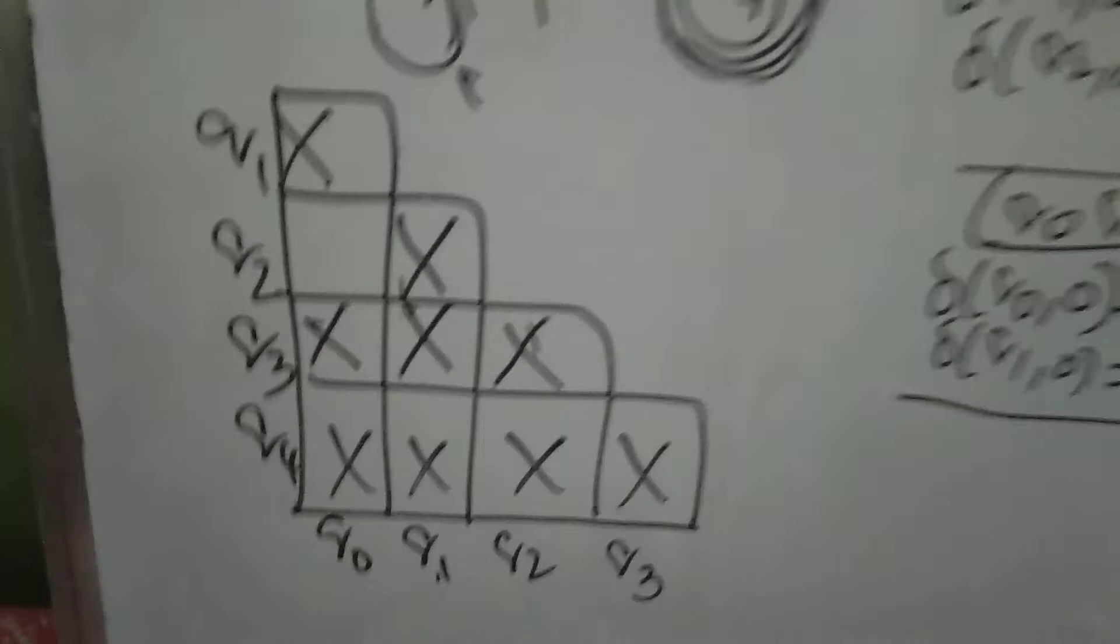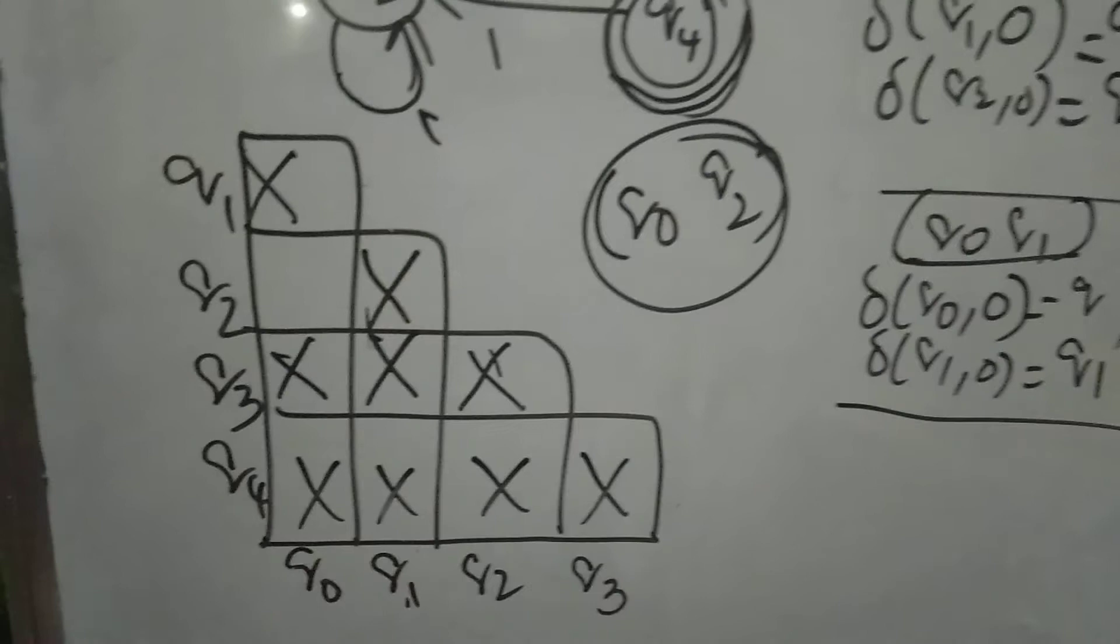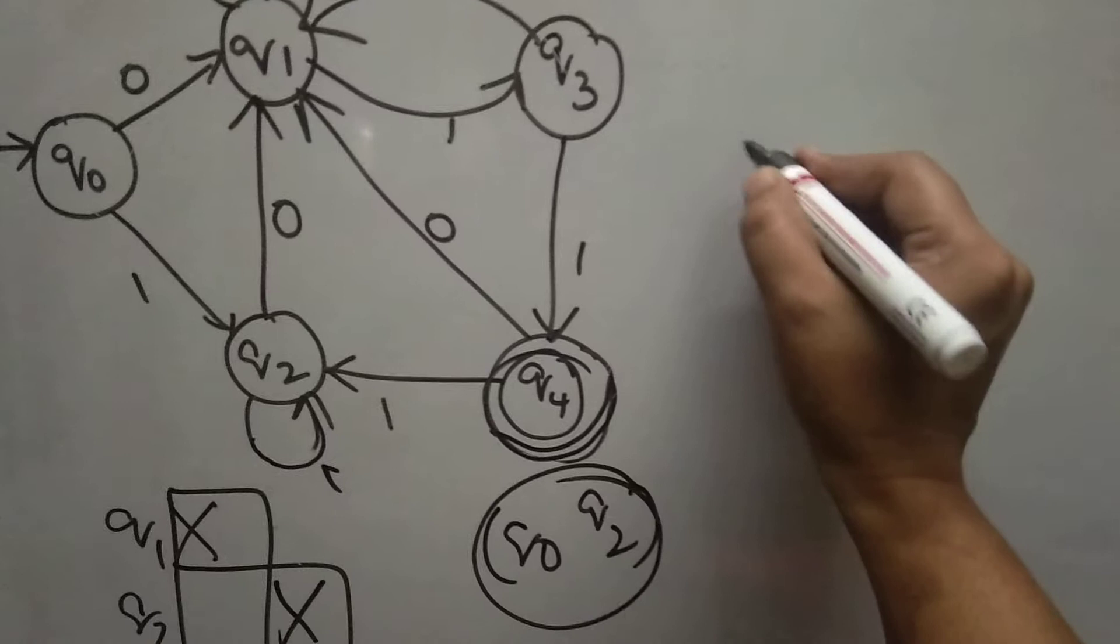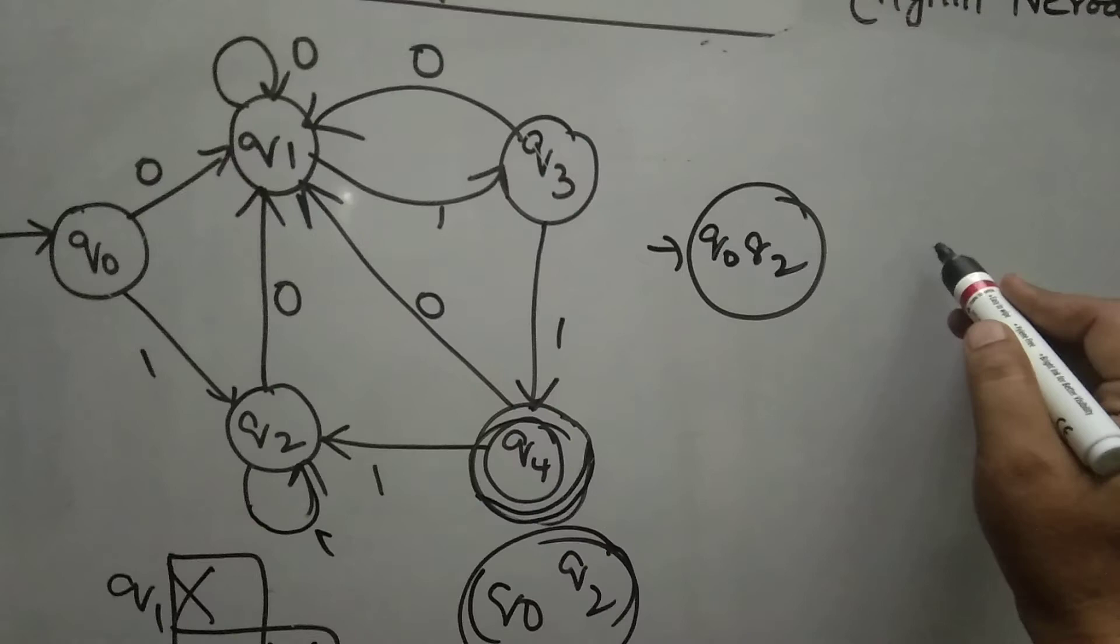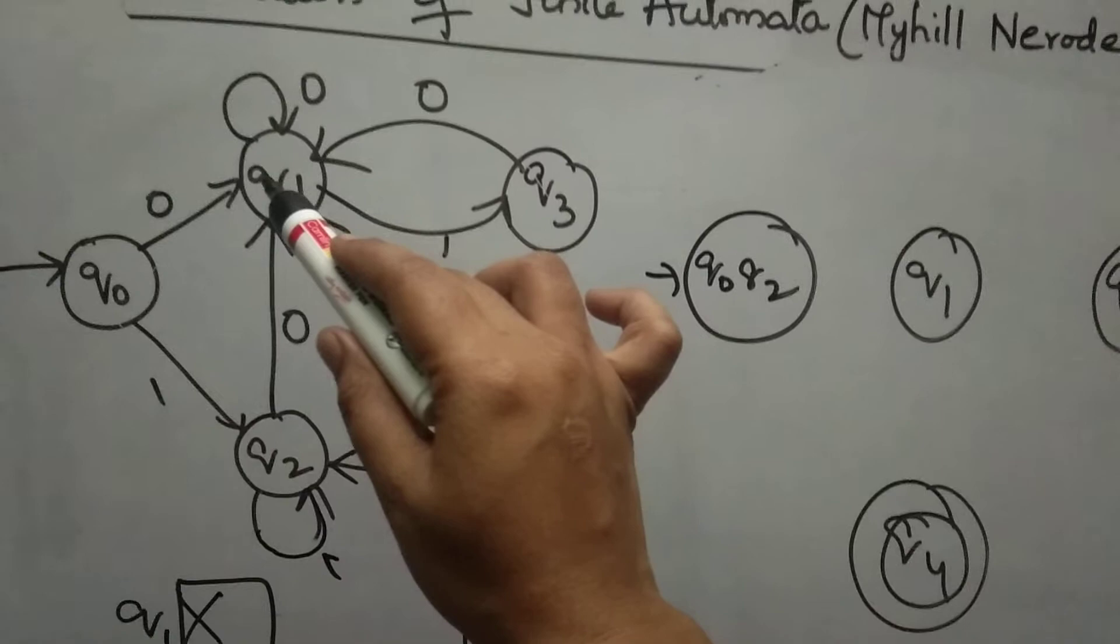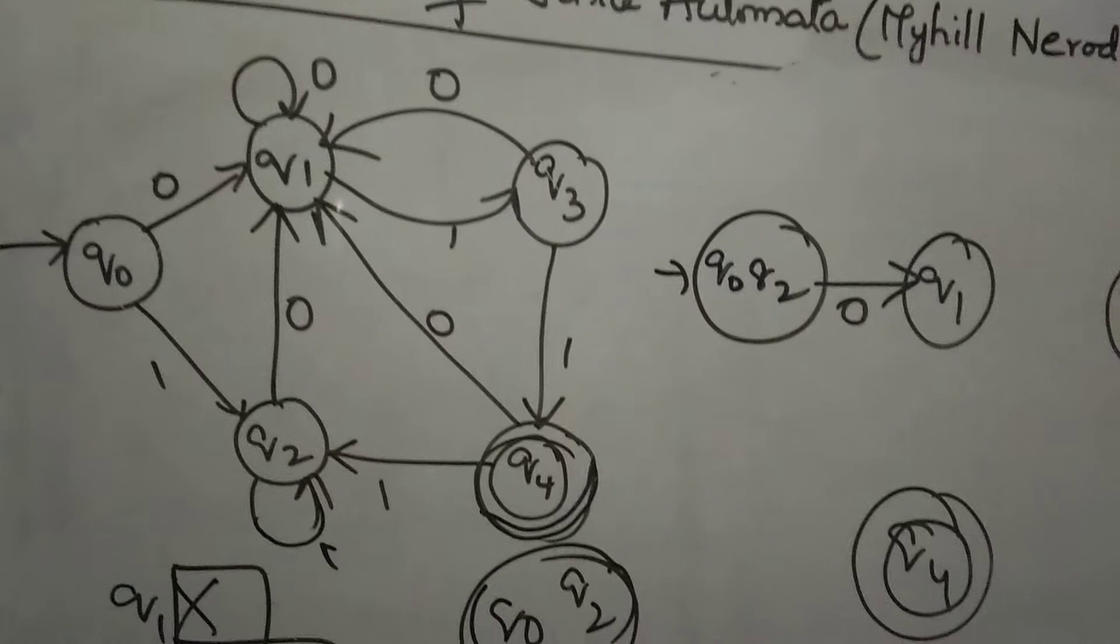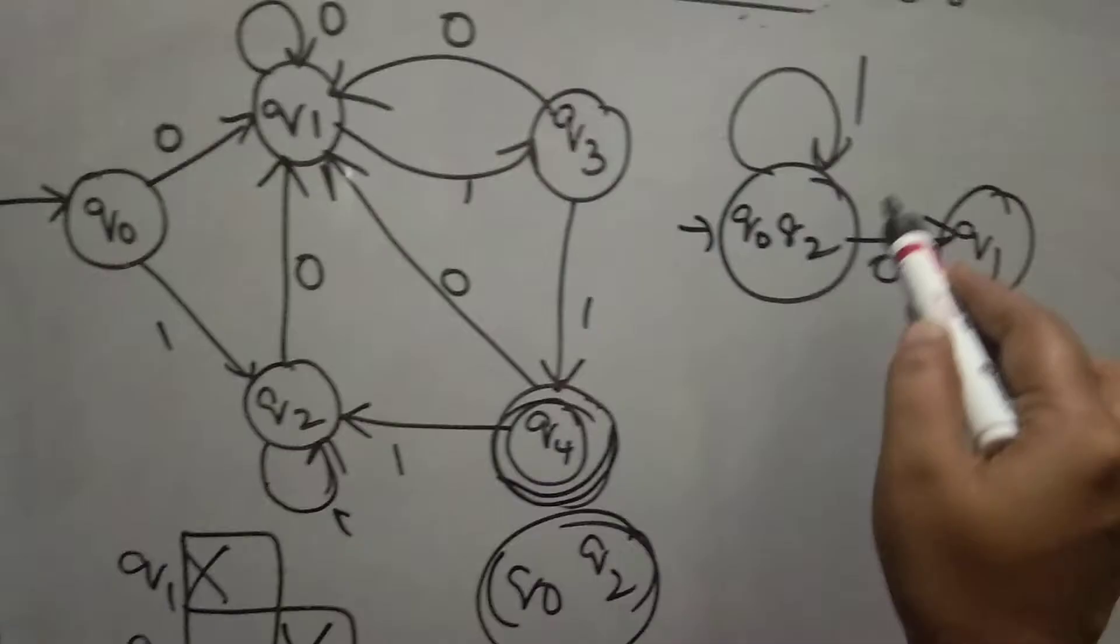The unmarked pair is Q0, Q2 and make this as one state. Unmarked pair is Q0, Q2. And the remaining states are Q1, Q3 and the final state is Q4. Q0 upon 0 is Q1.